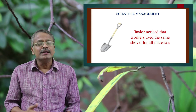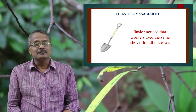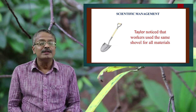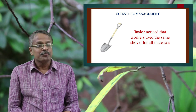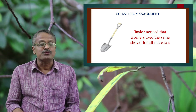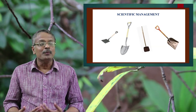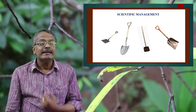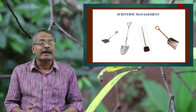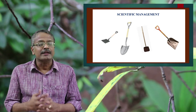From his experience, he could understand some serious drawbacks in the working environment of manufacturing companies. He noticed that workers used the same shovel for all materials, even though the various materials differed in weight. By observing workers and making experiments, Taylor could find out the ideal weight of a shovel and the ideal weight of material that can be effectively handled with it. Thus, this was the starting point of the standardization of tools.